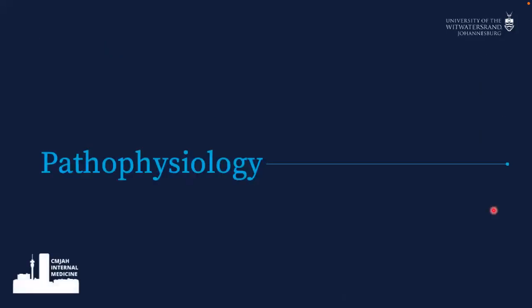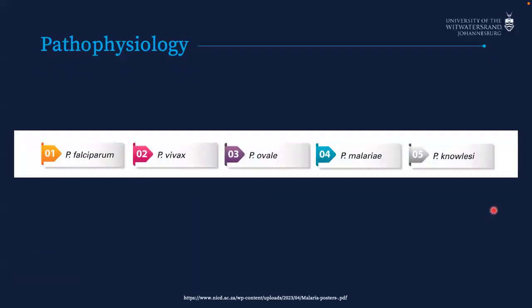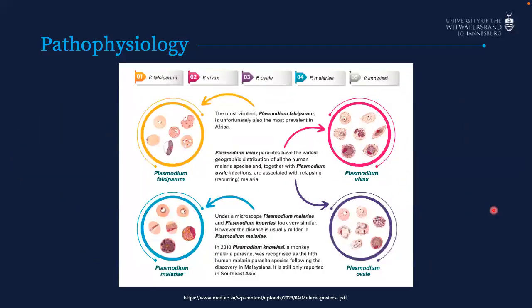Now for the pathophysiology — those writing Part Ones, pay attention, you will be asked this. There are five species of Plasmodium: P. falciparum is the most virulent and unfortunately the most prevalent in Africa. P. vivax and P. ovale can cause relapsing infections. P. malariae causes very mild disease. P. knowlesi was only discovered in 2010 — a monkey malaria parasite that does affect humans, but only in Southeast Asia for now.